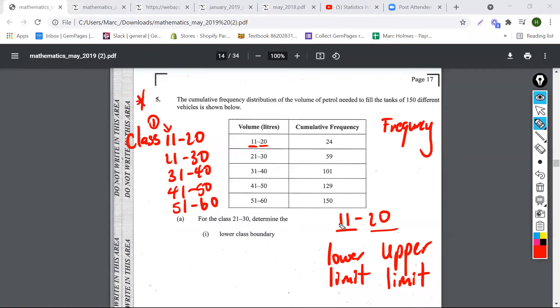Another thing we need to know is the class width. How do we calculate the class width? Basically, if we subtract 11 from 21 we'd get the class width. Let me show you: 21 minus 11, that would give us 10, and that's the class width for the table.